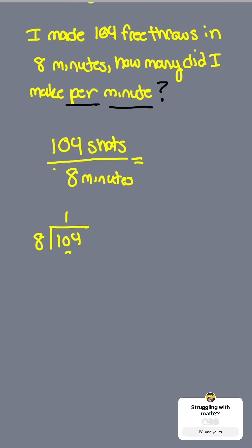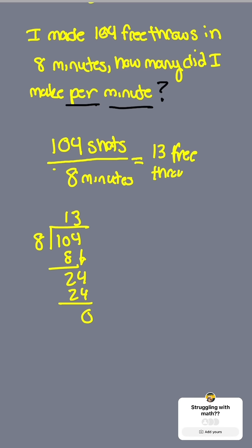How many did I make per minute? Well, once I do the long division, it comes out to 13 free throws per minute.